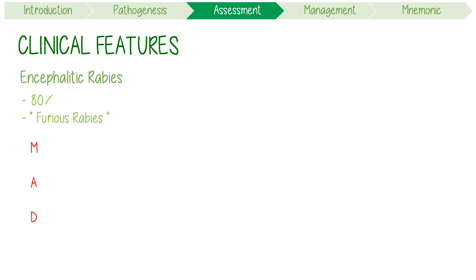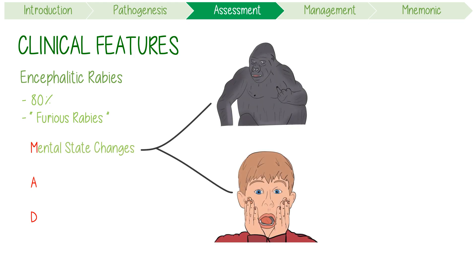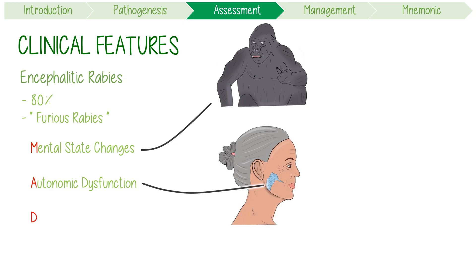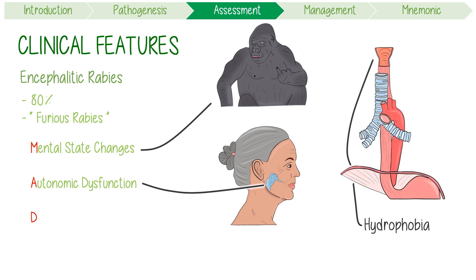The MAD mnemonic: M stands for mental state changes — hallucinations and combativeness are common, along with episodes of wild excitability typically followed by periods of complete lucidity. A stands for autonomic dysfunction, with hypersalivation being the most notable feature. Another curious phenomenon is hydrophobia, involving involuntary, painful contractions of the diaphragm and pharyngeal muscles in response to swallowing liquids.